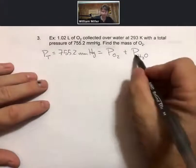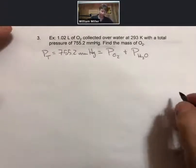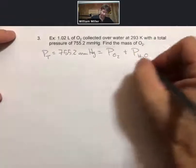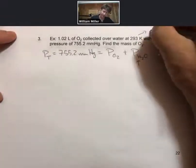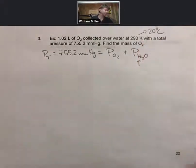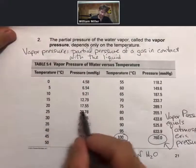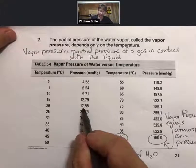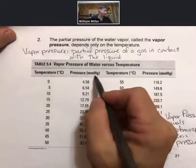The partial pressure of the H2O is on the previous slide in that table. 293 Kelvin, subtract 273 from that and you get 20 degrees Celsius. We come back to this table right here. At 20 degrees Celsius, the partial pressure or the vapor pressure is 17.55 millimeters of mercury.